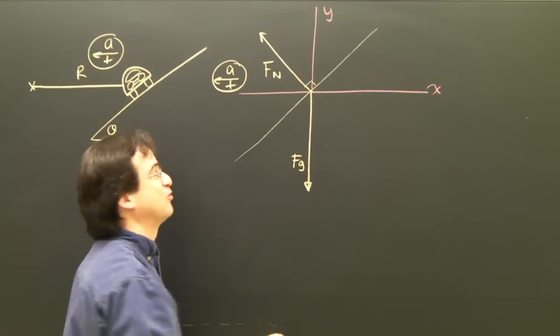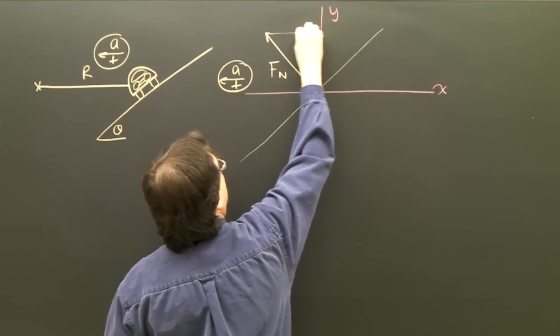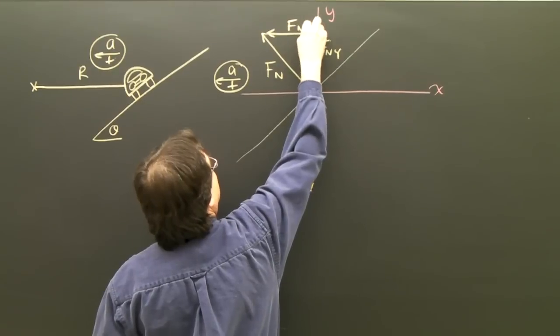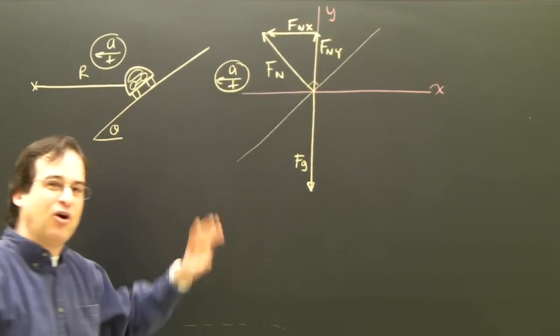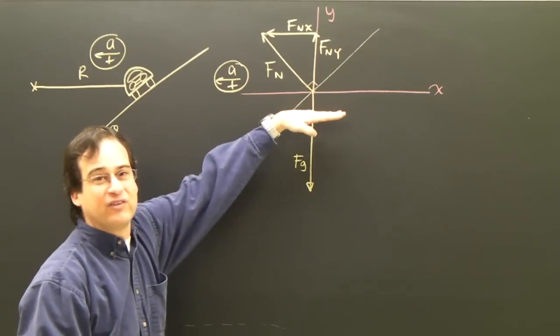So Fg is along the y axis. I don't have to worry about that. But Fn, I can split it into two components like this. This is Fn,y and Fn,x. I split all the forces into components. I look at it and I say if it's accelerating along the x axis, then there's no acceleration along the y axis.